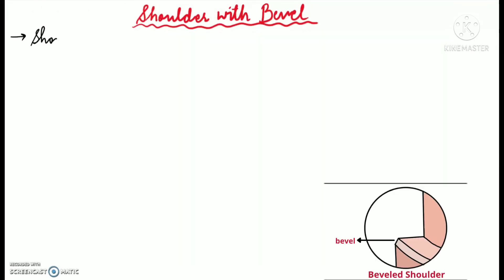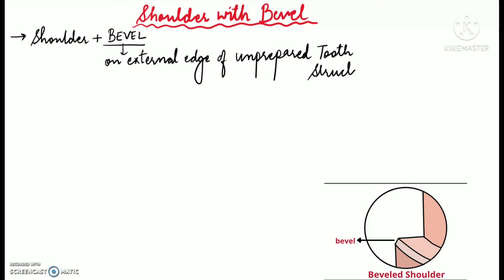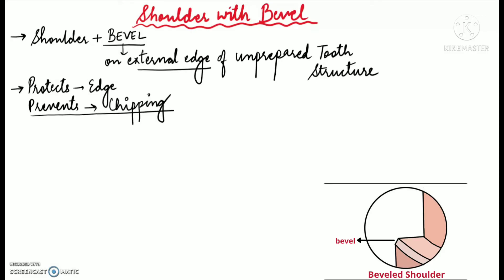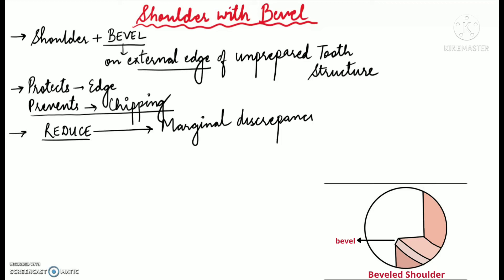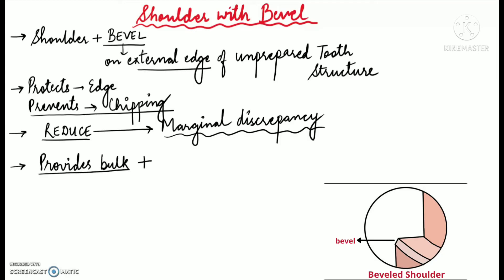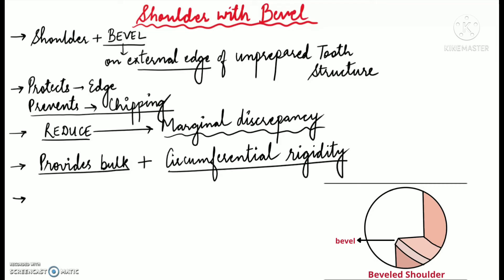Next is the shoulder with a bevel. It is a shoulder finish line with a bevel on the external edge of the unprepared tooth structure, as seen in this diagram. This finish line protects the edge of the finish line by preventing chipping. It is said to reduce the marginal discrepancy of the gold restoration as it can be burnished. It provides bulk of restorative material and circumferential rigidity, but it is not conservative. The shoulder with bevel is sometimes indicated to hide the supra-gingival facial metal margin of a PFM crown.